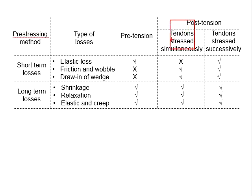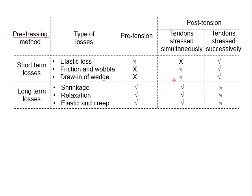For the post-tensioning member, anchorage is required at both ends — one live end and one dead end. The draw-in of the wedges at the dead end has already consolidated before the transfer of the pre-stressing force. However, the live end will undergo draw-in due to the mechanical interlocking mechanism of the anchor. When the hydraulic jack is released, this draw-in causes immediate shortening of the steel tendon, resulting in loss of pre-stressing force.